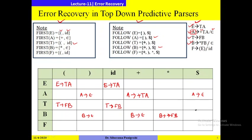For F → (E, a non-epsilon production, under open bracket we write F → (E. For F → id, a non-epsilon production, under id we write F → id. Now using this predictive parsing table, we want to process the given input string.